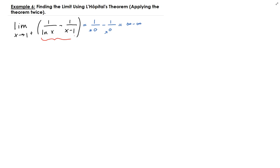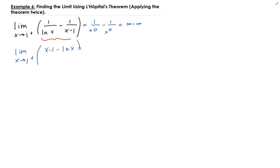We need to write this over a common denominator. So this is going to be the limit as x approaches 1 from the right, where the least common denominator is ln(x) times (x minus 1). Simplifying inside, you get (x minus 1) minus ln(x), divided by ln(x) times x times (x minus 1).